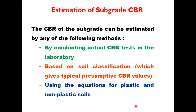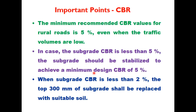Once traffic is known, the second design step is to estimate subgrade CBR, which can be done by conducting an actual CBR test in the laboratory on a remodeled sample, or estimated based on soil characteristics using equations for plastic and non-plastic soils. An important point: the code recommends a minimum CBR of 5% for rural roads even when traffic volumes are low. If actual CBR is less than 5%, the subgrade should be stabilized to achieve the minimum design CBR of 5%.